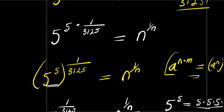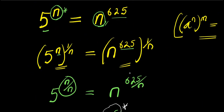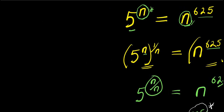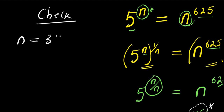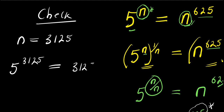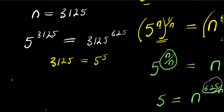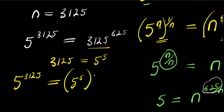So at this point we have gotten our value for n. The next step is to check by inserting that value back into the original equation. With n equals 3125, I have 5 to the power 3125, equals 3125 to the power 6/5. And since 3125 equals 5 to the power 5, I substitute: 5 to the power 3125, equals (5^5) to the power 6/5.